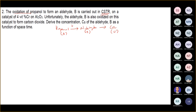So you just label it as K1 for the rate constant of the first reaction, and K2 for the second reaction. From here, you need to do some derivation because you need to find what CB is.